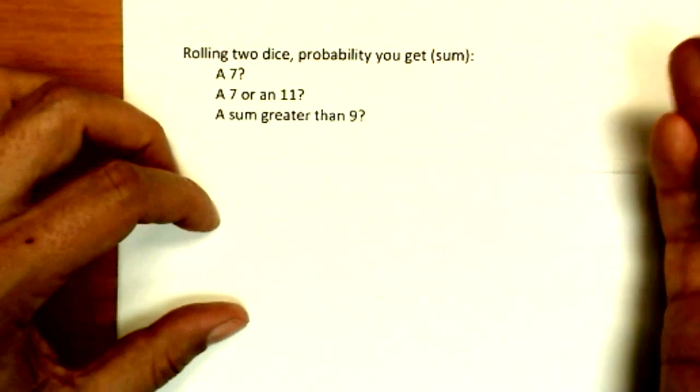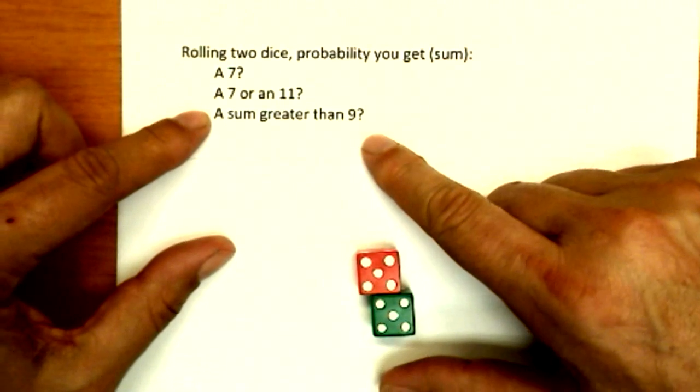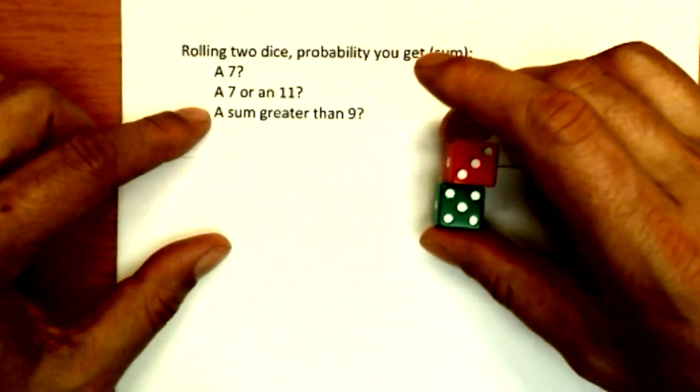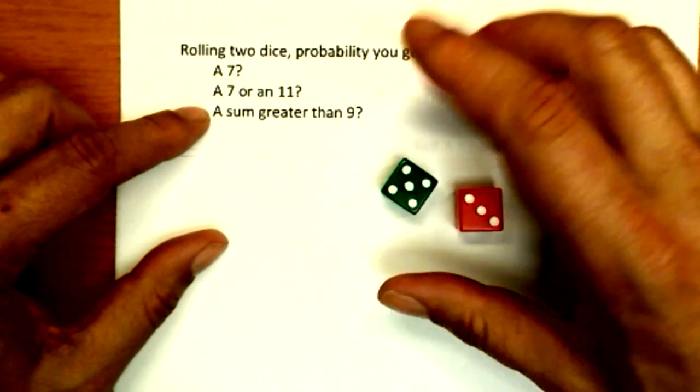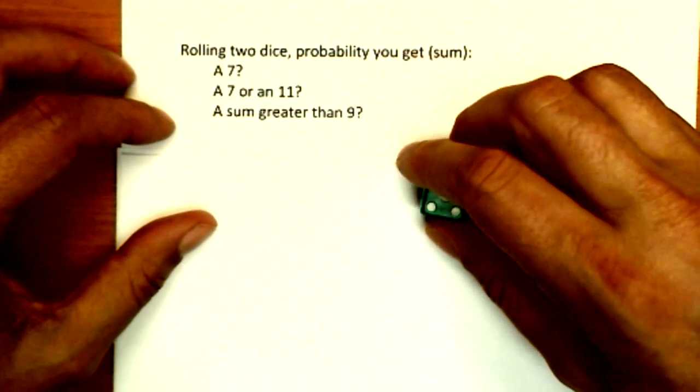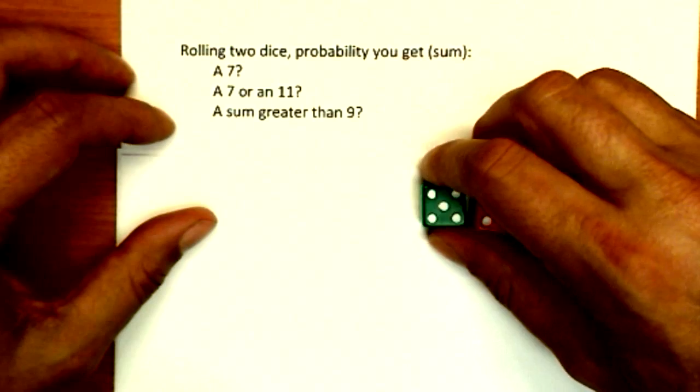We got an eight. Okay, this time we got a ten. Now we could answer these questions through empirical probability. I just throw these dice a thousand times, write down my sums. I will get a nice idea of how likely any one of these is to come. Won't be perfect, but it'd be pretty good. However, I don't think you want to watch me do that on the video, so we're going to look at this a little bit more analytically.